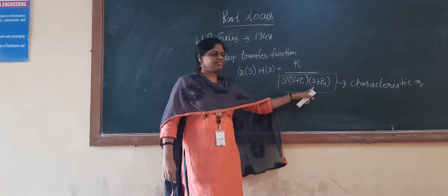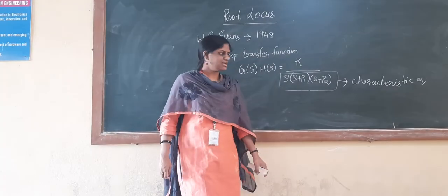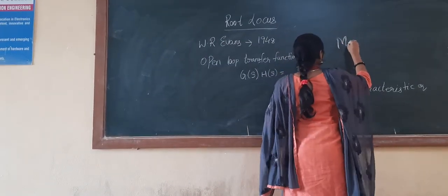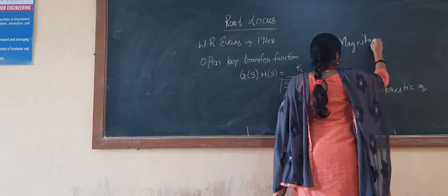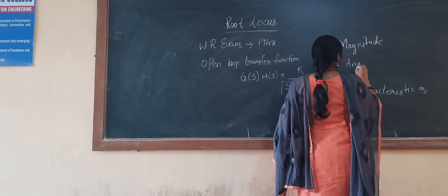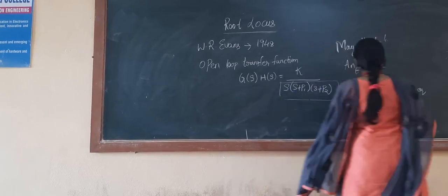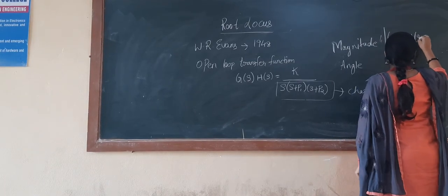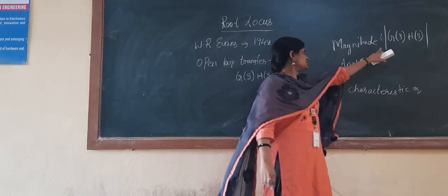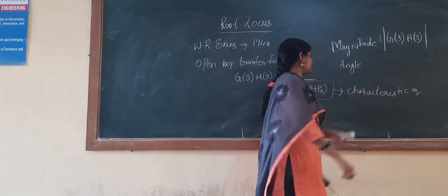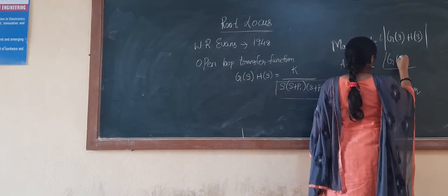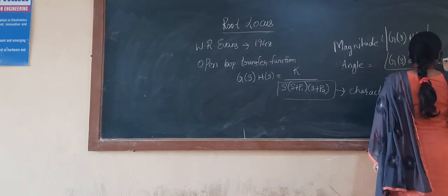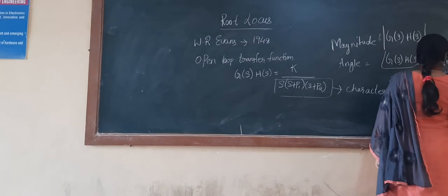Before going further, you have to calculate the magnitude as well as the angle for this transfer function. The angle condition is: the angle of G(s)H(s) equals (2Q+1) times 180 degrees. This is the angle that we have to calculate in the root locus technique.